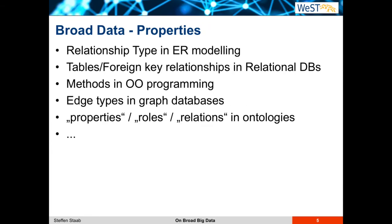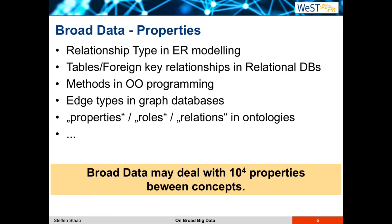And not only concepts, but also properties. You might have a relationship type in ER modeling, or a table could represent a property, or a foreign-key relationship might represent a property in a relational database. You have methods in OO programming, or edge types in graph databases. And in ontologies, you talk about properties, relations and roles. Like with concepts, the number of properties you really have to deal with is much larger in broad data — you may easily end up with 1,000 or 10,000 properties.